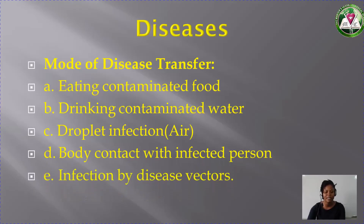Then infection by disease vector. Disease vectors are small animals that carry causative organisms and transmit them to man. Examples include the female Anopheles mosquito, the tsetse fly, and the black fly.